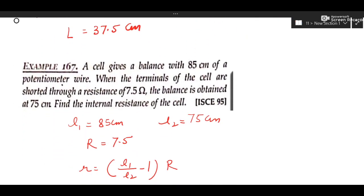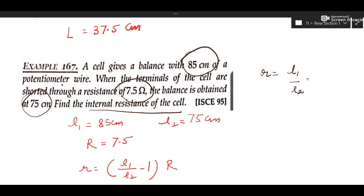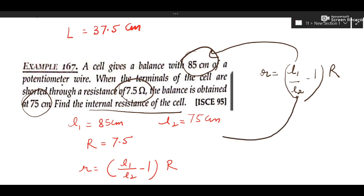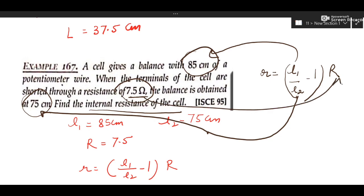A cell gives a balance at 85 centimeter. When the terminals are shorted through an external resistor, the balance point shifts to a new value. To find internal resistance, recall the formula: r = (L1/L2 − 1) × R_external, where L1 is the balancing length of the cell alone and L2 is the balancing length when the external resistor is connected. Substitute the values directly — it is a substitution-based numerical.